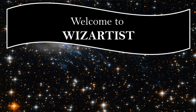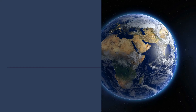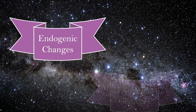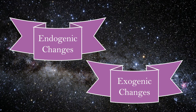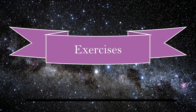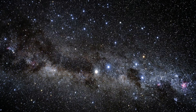Hello everyone. Welcome back to WizArtist. In this video we will be learning Class 7 Geography Chapter 3, Our Changing Earth, and this video will focus on solving the exercises given in the textbook. In the previous two videos we have discussed about endogenic and exogenic changes and each of the examples were explained in detail. Be sure to check that video out to understand about the topic. In this video we will be doing the exercises, and the first part is: answer the following questions.